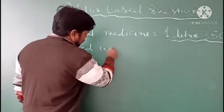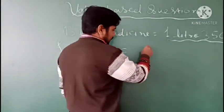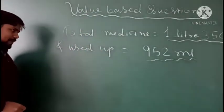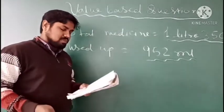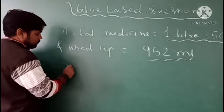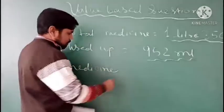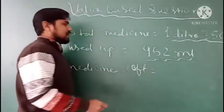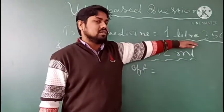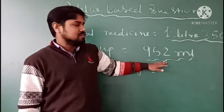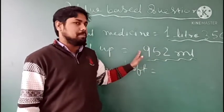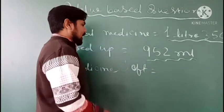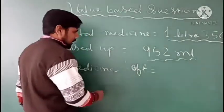The amount of medicine used up is 952 ml. This much liquid the patient used. So now you have to find how much medicine was left. Therefore, medicine left equals total medicines minus used-up medicines. In the used-up medicines we don't have any value in the liter place, so we will keep 0 in the liter place.